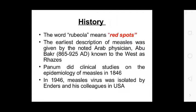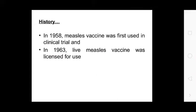History: the word measles means red spots. The earliest description of measles was given by noted Arab physician Abu Bakar (865 to 925). Panum did clinical studies on the epidemiology of measles in 1846. In 1946 the measles virus was isolated by researchers in the USA. In 1958 the measles vaccine was first used in clinical trials, and in 1960 a live vaccine was licensed for use.